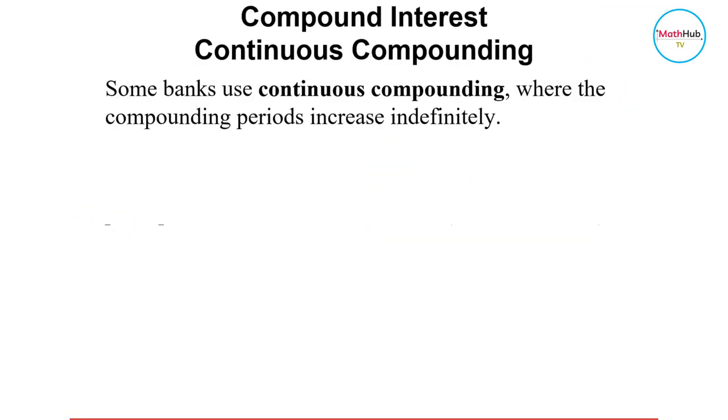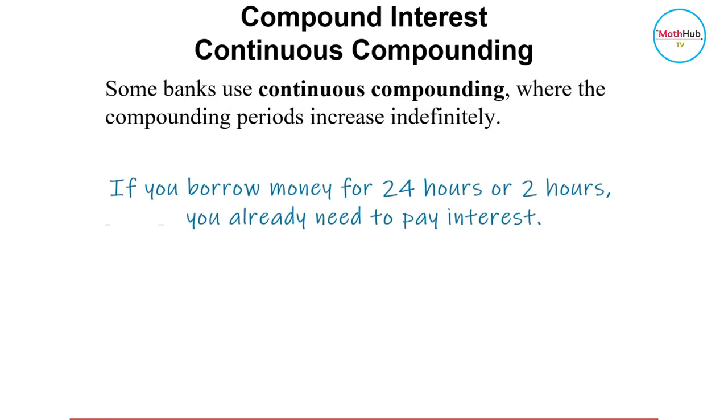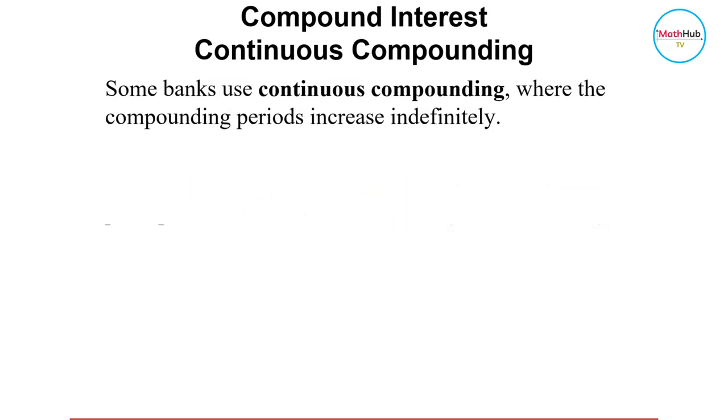Some banks actually use continuous compounding, where the compounding periods increase indefinitely. That means if you take out money today and decide to return it after 24 hours, your money would already incur some interest. Or if you decide to return it two hours later, you have to return it with interest.